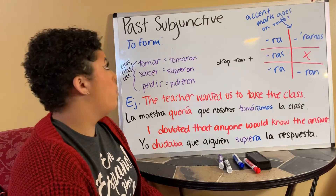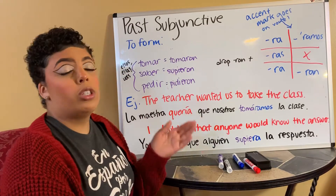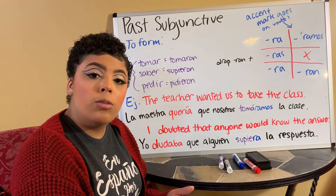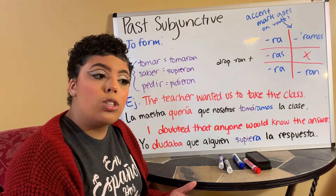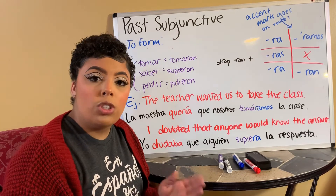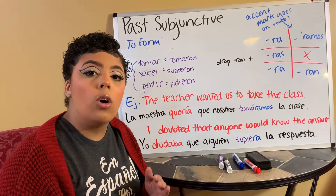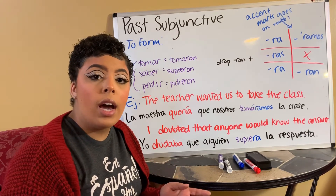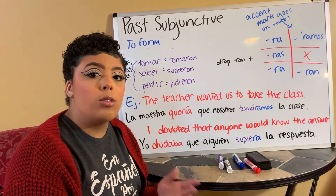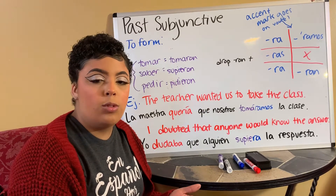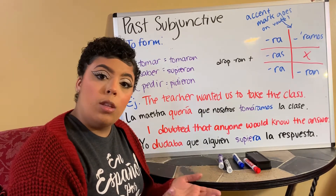Vamos a aprender past subjunctive, or imperfect subjunctive. This is used to express wishes, doubts, wants, and emotions — all in the past. So just everything we learned in the present subjunctive, but in the past.